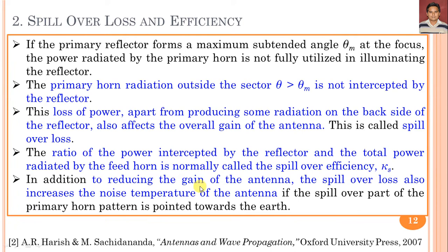The ratio of the power intercepted by the reflector to the total power radiated by the feed horn is called the spillover efficiency, represented by κ_S. In addition to reducing the gain of the antenna, the spillover loss also increases the noise temperature of the antenna — particularly when the spillover part of the primary horn pattern is directed towards the earth.